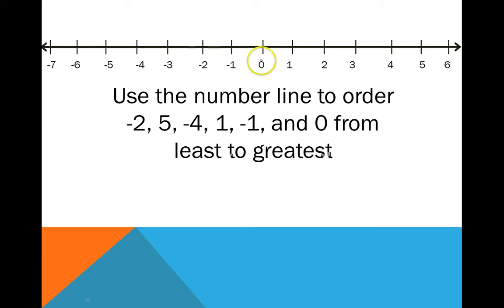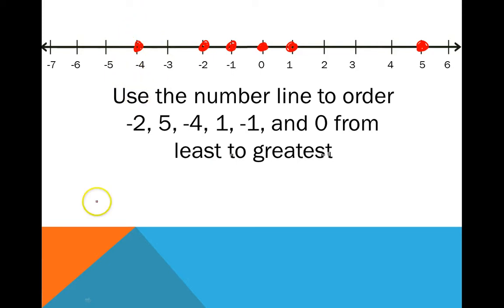Negative 2 — we go from 0 and then we go over 2. For 5, start at 0, go to the right to positive 5. Negative 4 is over here. 1 is right there. Negative 1 is just next to 0. And 0 is right there in the middle. Now, the further you are to the left on the number line, the smaller your number — the less your number is. So my least number is going to be negative 4; it's the number furthest to the left on the number line.